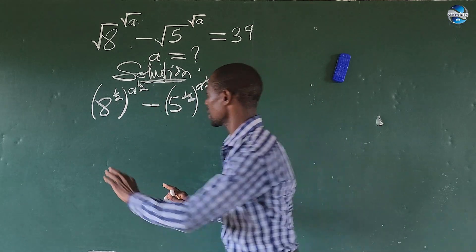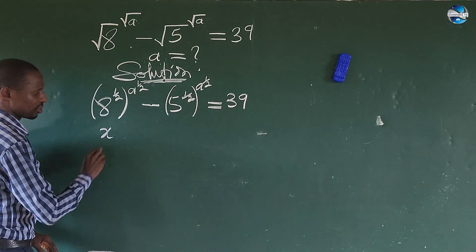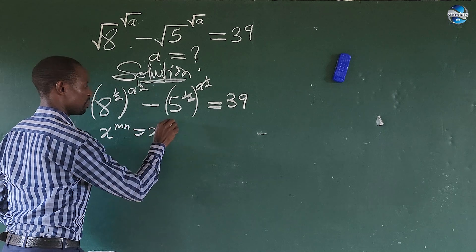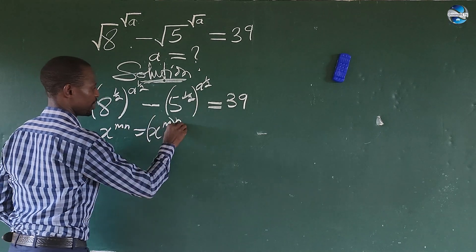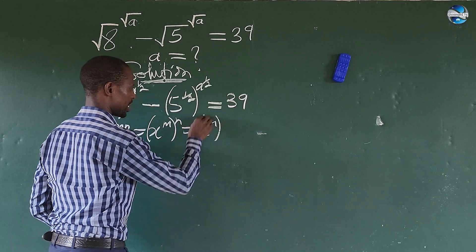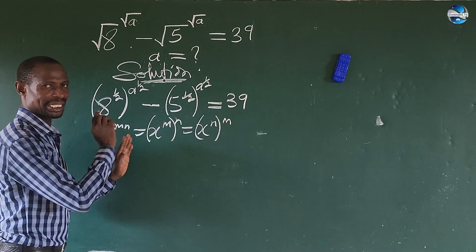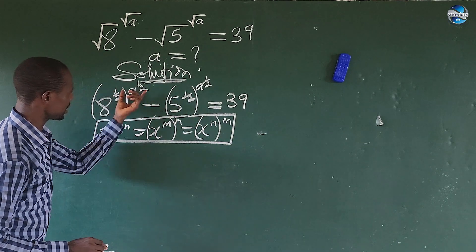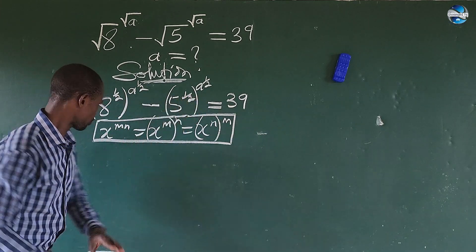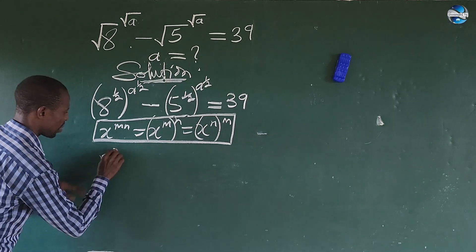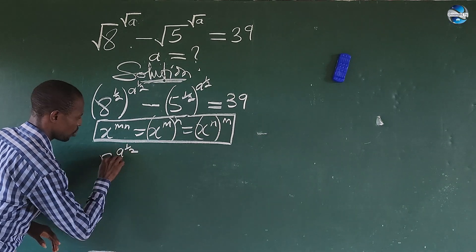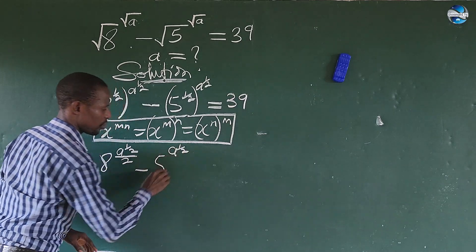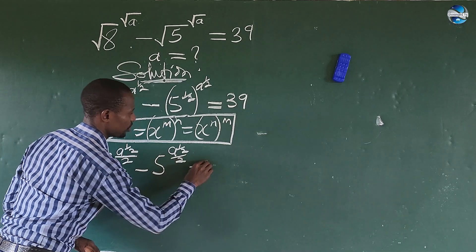According to the law of indices, if you have x to the power of n raised to the power of n, this is also equal to x to the power of 1 over n, raised to the power of n. So we can interchange the exponents or the powers. If we look at this law, then we can rewrite this expression as: A to the power of A to the power of 1 over 2, all over 2, minus 5 to the power of A to the power of 1 over 2, all over 2, equal to 39.